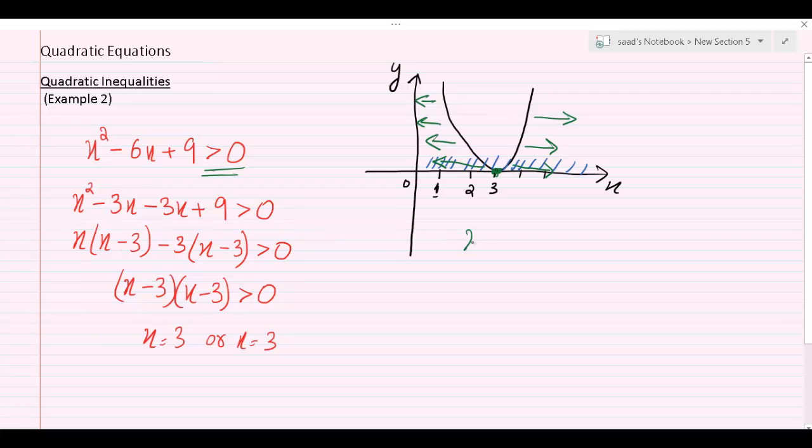So our final answer would be x is not equal to 3. Or another way of writing the same answer would be all real values with the exception of 3, except 3. This is another way of writing the same answer.